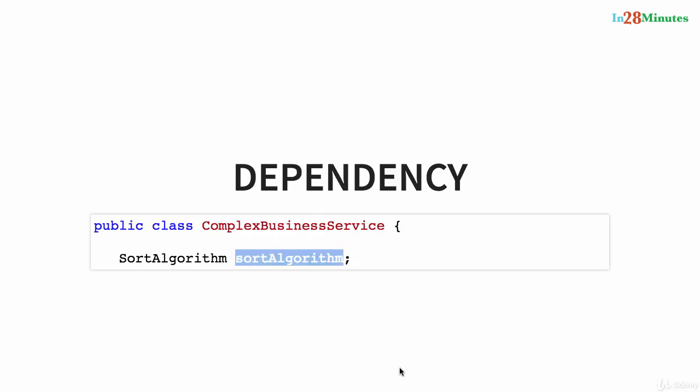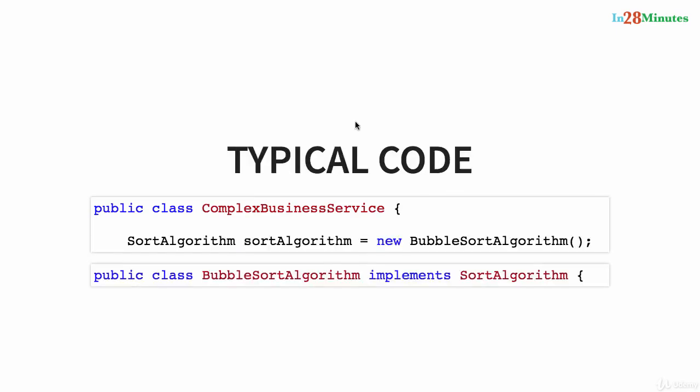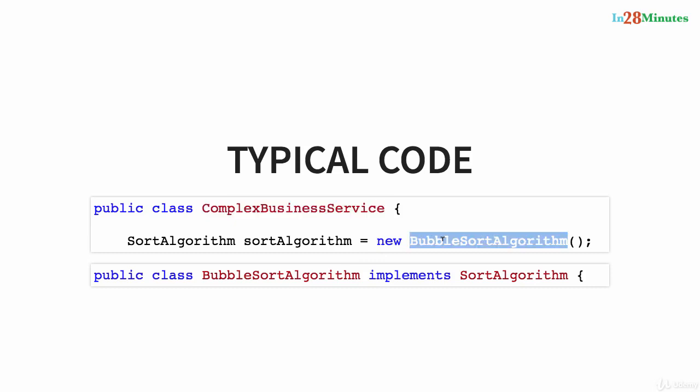This might look like a very simple example, but when we are talking about big applications, we are talking about thousands of classes with different layers having multiple dependencies. So in a typical application you will have a lot of classes with a lot of dependencies. Before Spring Framework, this is how we used to create dependencies: ComplexBusinessService needs a sort algorithm, so we use a BubbleSortAlgorithm.